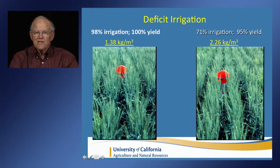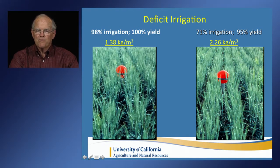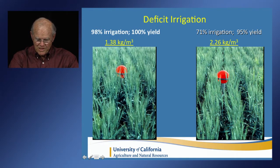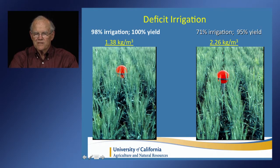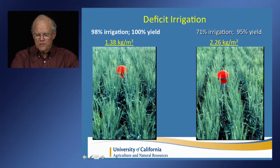This slide illustrates the fundamental difference between deficit irrigation and conventional irrigation. The image on the left shows a field that was fully irrigated; beside it to the right, a field that was partially irrigated with a deficit of roughly 30 percent. In the deficit-irrigated field, the yield is reduced by about 5 percent — that's the yield per unit of land. But the yield per unit of water is increased by about 60 percent. So this is what characterizes deficit irrigation: reduced yield per unit of land, increased yield per unit of water.